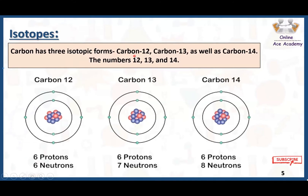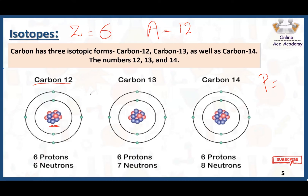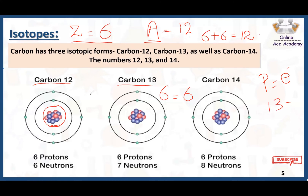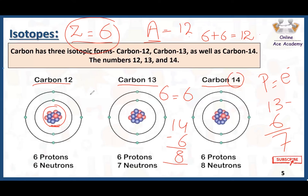Carbon has three isotopic forms: carbon-12, carbon-13, and carbon-14. The atomic number of carbon is six. In carbon-12, there are six protons, six electrons, and six neutrons, since 12 minus 6 equals 6. In carbon-13, the atomic number is still six and the number of neutrons is seven, since 13 minus 6 equals 7. In carbon-14, the atomic number is again six, and the mass number is 14, so 14 minus 6 equals 8, meaning there are eight neutrons in this carbon atom.